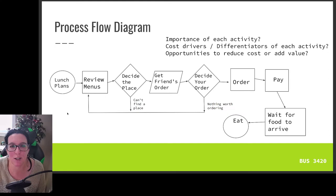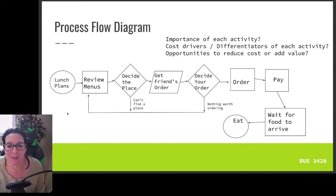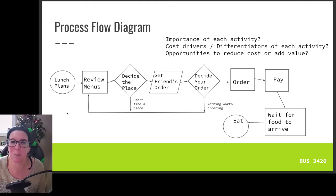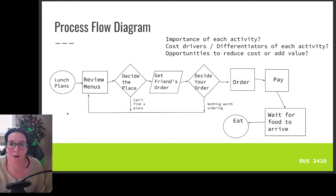At each step, we assess how it impacts cost and our ability to be unique or different — going back to Porter's generic strategies. Porter's generic strategies include cost leadership, where we have lower costs and therefore lower prices for our customer, or differentiation, where we can be unique and different. There's also a focus version of each, targeting a specific niche or target market. As we go through our value chain, we want to look at how each activity contributes to being a cost leader or providing something unique, with better quality or differentiation from the competition.